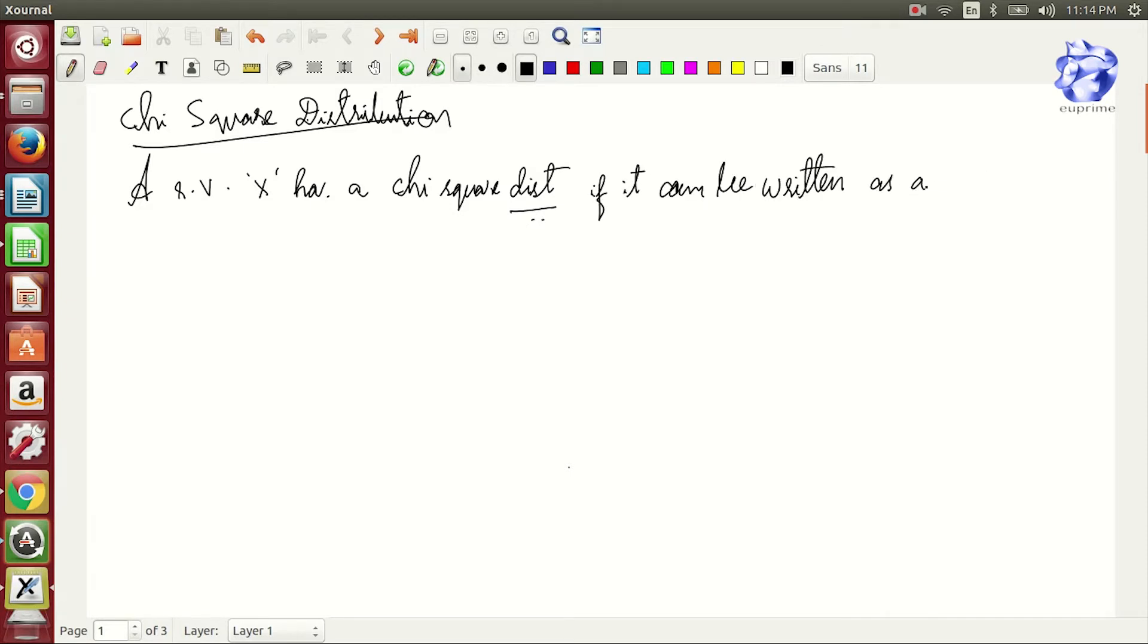A random variable x has a chi-square distribution if it can be written in terms of squares as x equals y1 squared plus y2 squared plus y3 squared where y1 to yn are mutually independent and n is degree of freedom.